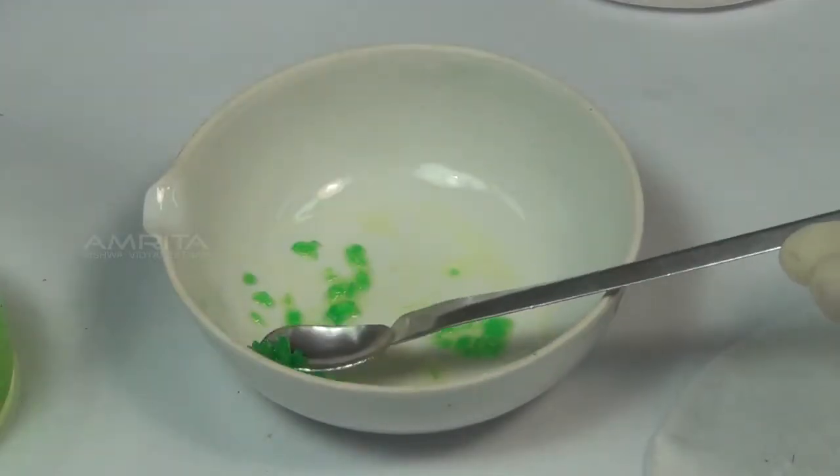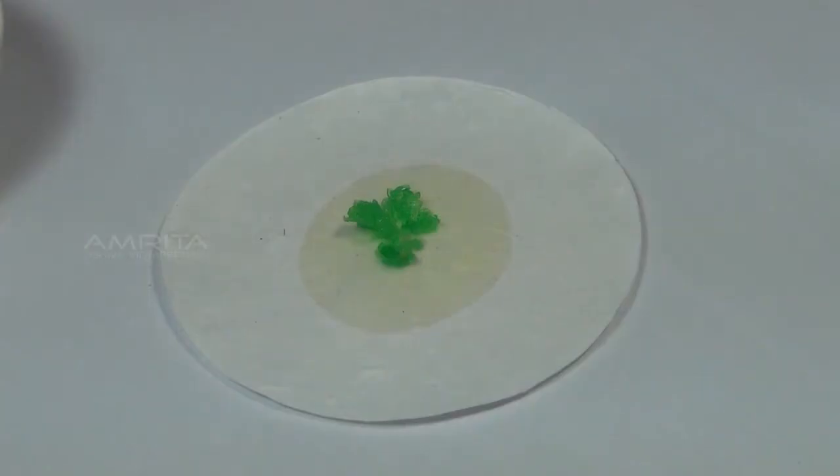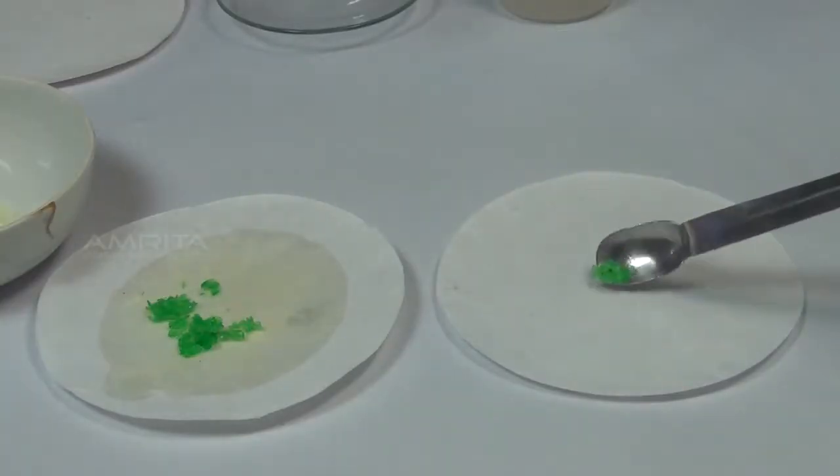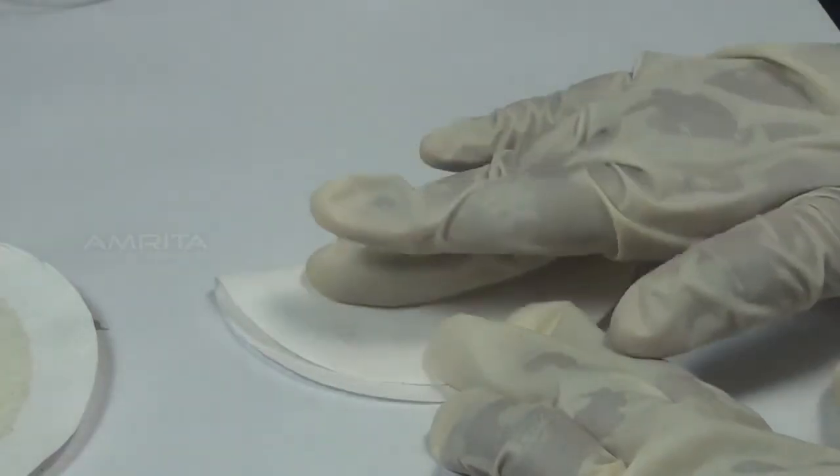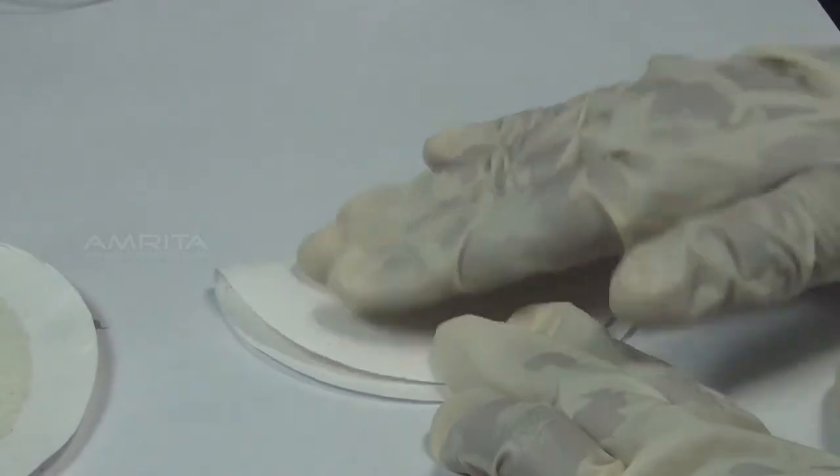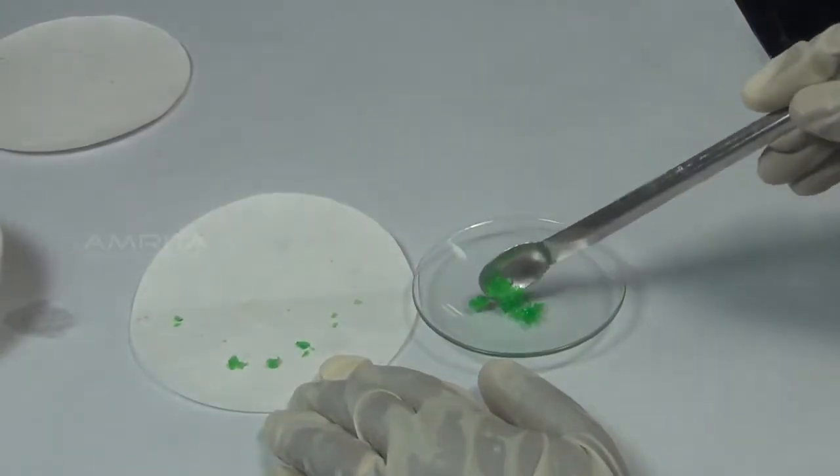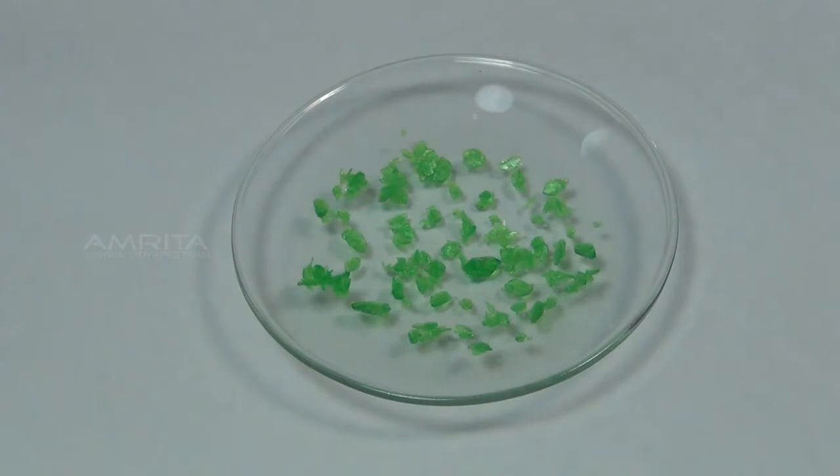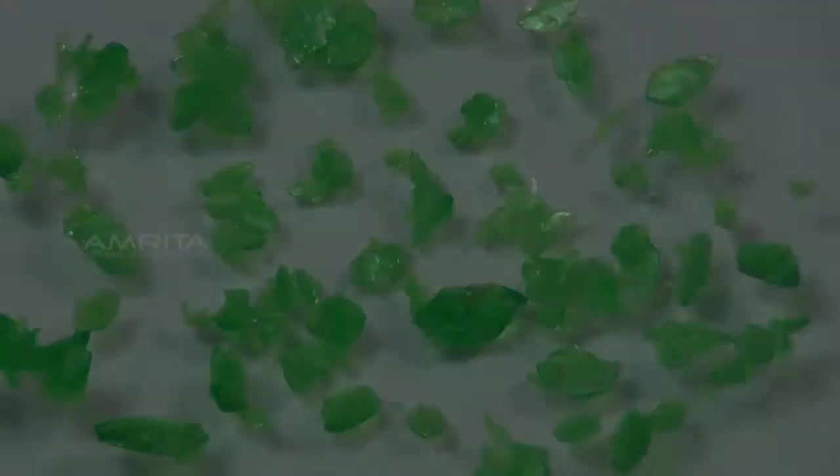Using a spatula, remove the crystals to a filter paper which soaks up the solution. Transfer the crystals to another filter paper and dry them by pressing gently between the folds of the filter paper. Now transfer the crystals into a watch glass. The crystals of pure potassium trioxalatoferrate-3 are emerald green in colour and are octahedral in shape.